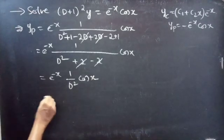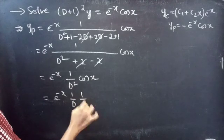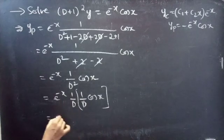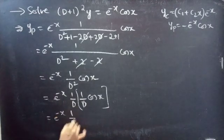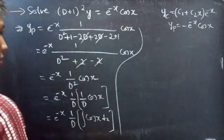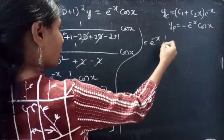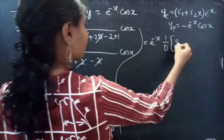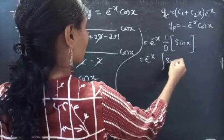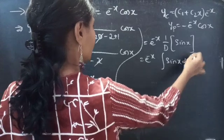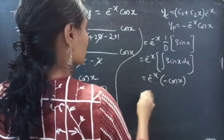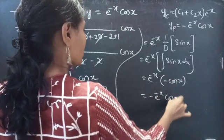We split 1/D² as (1/D)·(1/D) and apply the integral operator twice. First, (1/D)·cos x = ∫cos x dx = sin x. Then (1/D)·sin x = ∫sin x dx = −cos x. So yp = e^(−x)·(−cos x) = −e^(−x) cos x. We get the same yp from both methods.